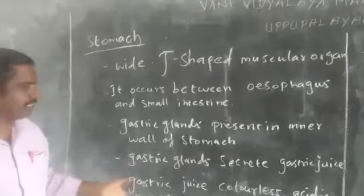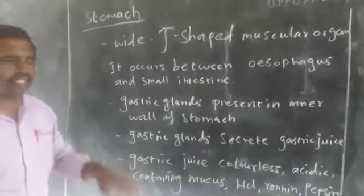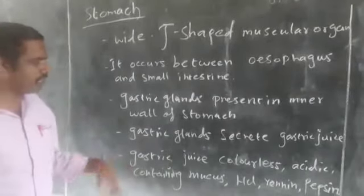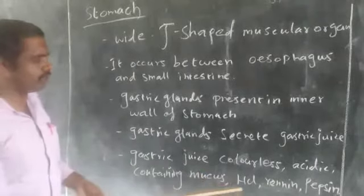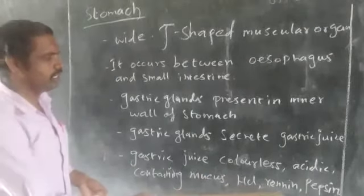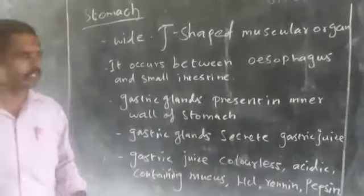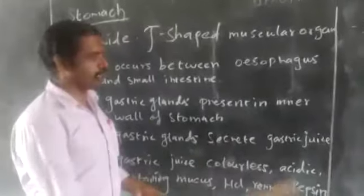The gastric juice is colorless and acidic in nature. It also contains mucus, hydrochloric acid, renin, and pepsin. What are the functions of renin and pepsin? You can see.